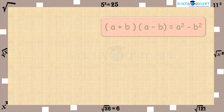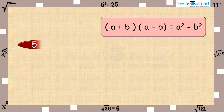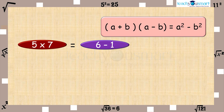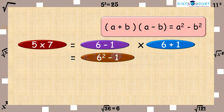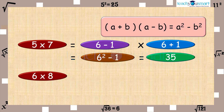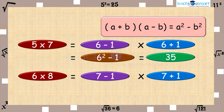Similarly, 5 multiplied by 7 equals (6 minus 1) multiplied by (6 plus 1), equals 6 square minus 1, equals 35. And 6 multiplied by 8 equals (7 minus 1) multiplied by (7 plus 1), equals 7 square minus 1, equals 48.